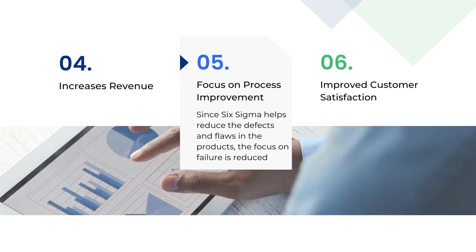The fifth advantage is a focus on process improvement. Since Six Sigma helps reduce defects and flaws in the products, the focus on failure is reduced. The focus is then moved to strategy and development of business processes rather than fixing identified problems. The complete focus can be on improvement and innovative ideas for product development. The processes are developed based on customer requirements, where Six Sigma plays a major role.